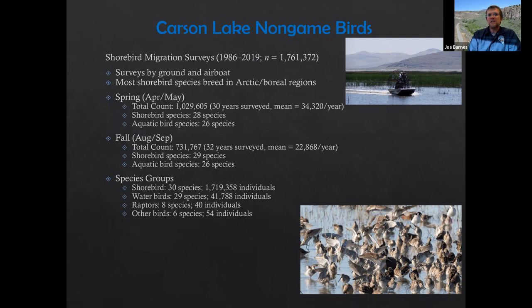Aquatic birds includes marsh birds, gulls, terns, pelicans, diving species, and various species of grebes. In the fall, after 32 years of survey, the average is about 22,000 to almost 23,000 birds per fall survey effort. The overall cumulative diversity: 30 different species of shorebirds making up the vast majority of the 1.7 million individuals counted. Water birds nearly 42,000, and raptors — eight species with only 40 individuals — plus various songbirds and passerines noted.